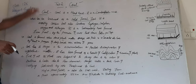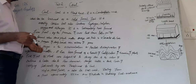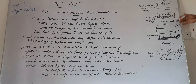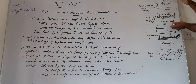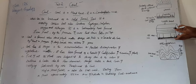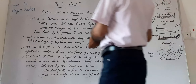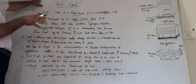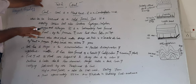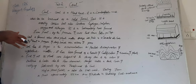Coal has its origin in the accumulation and partial decomposition of vegetative matter. It has been formed as a result of the compression of remains of plants — layers one after the other pressing down on plant remains. Due to this pressure, vegetative matter and other parts of plants get decomposed and decayed.